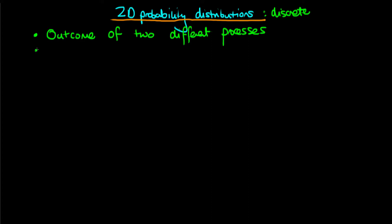And because we're dealing with a discrete two-dimensional probability distribution, then each of the outcomes for each one of the processes must be confined to take on a discrete set of potential values.